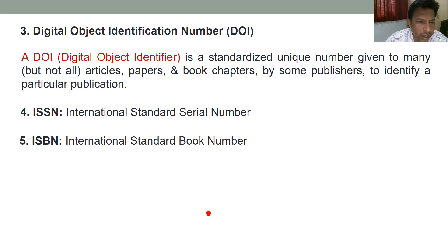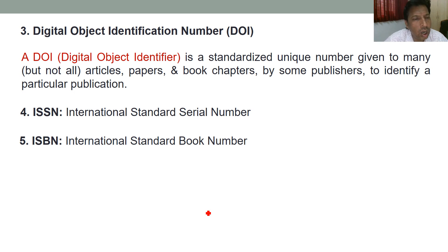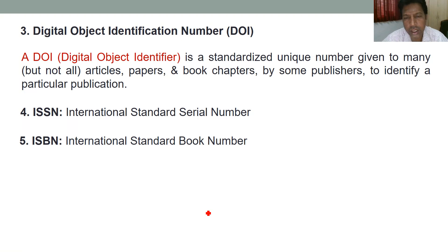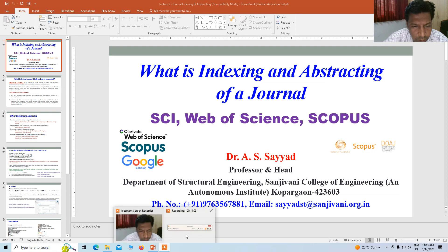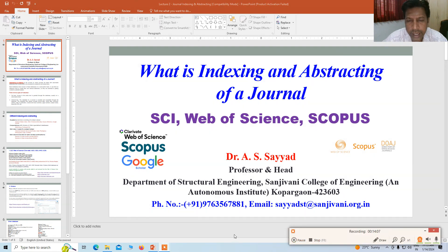As a closing remark, always try to publish papers in journals that are indexed in either Web of Science or Scopus only. Do not publish in other databases because those journals have not passed through stringent quality checks. As far as academic processes are concerned — for getting a PhD degree, for NBA accreditation, NAAC accreditation, and even ANRF ranking — only papers published in SCI, Web of Science, or Scopus indexed journals are considered. I hope you liked this video, and in the next video I will share more information about research. Thank you very much.